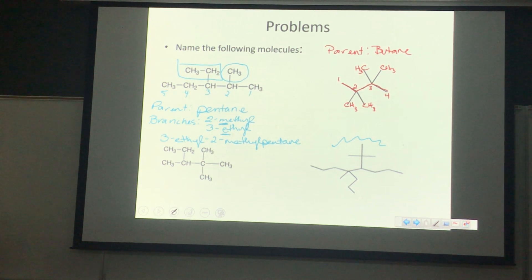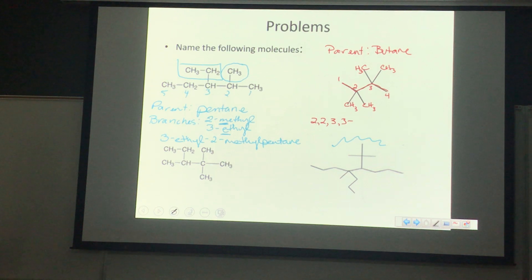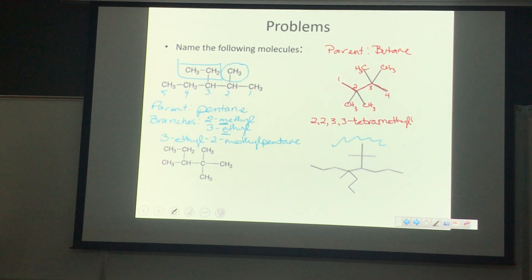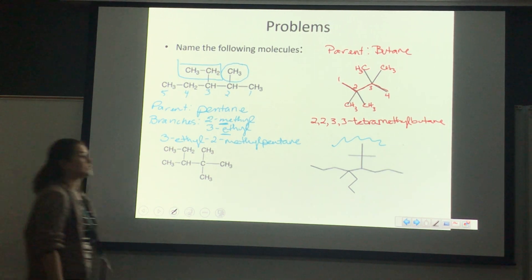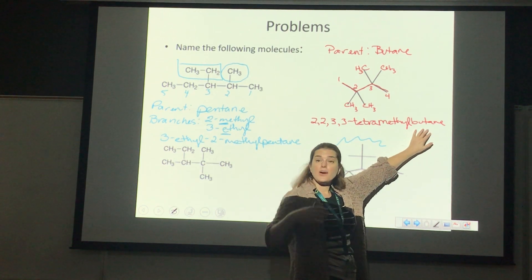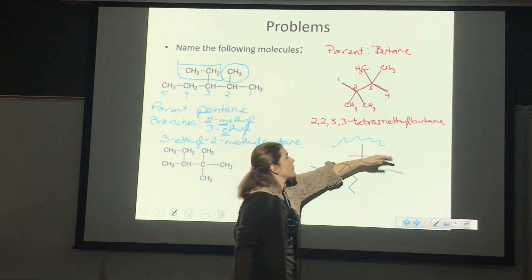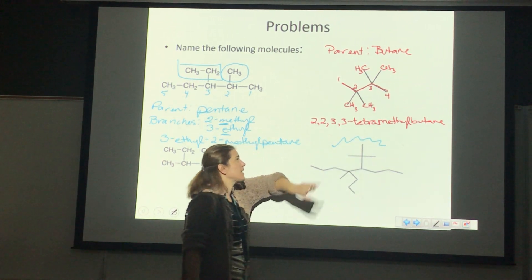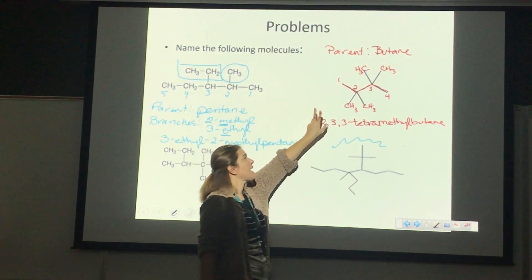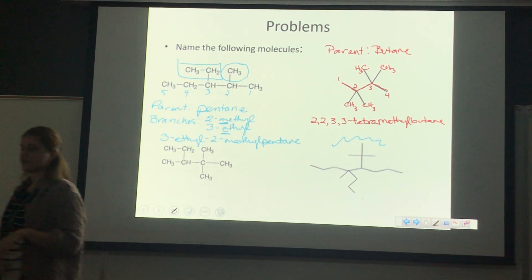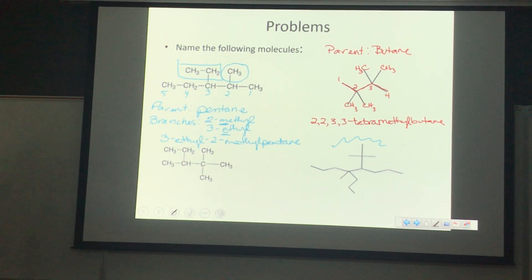It looks like a little dog there. What's the parent chain on that one? It looks like we're going to have a butane — four carbons — as the parent chain. We then have to decide which of our four-carbon chains is going to be the parent we choose.